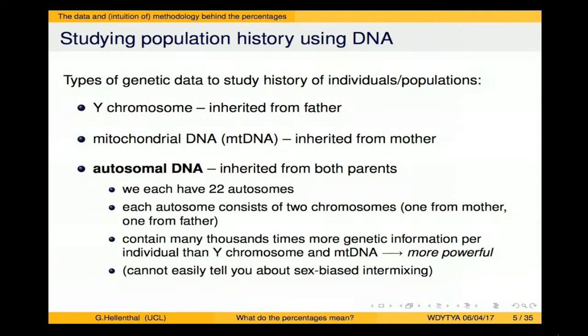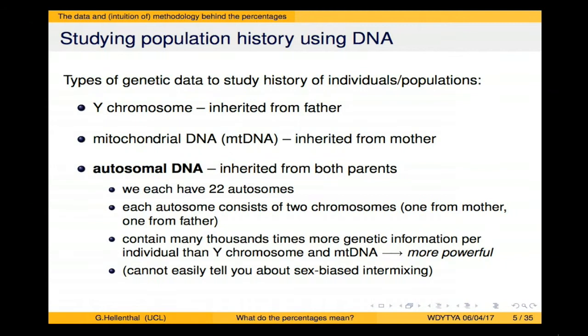While the Y-chromosome traces to one single ancestor and mitochondrial DNA to another, your autosomes can trace to thousands of ancestors — that's why there's thousands of times more information, giving a more complete picture of ancestry. A drawback is that it can't easily tell you about sex-biased mixing. For example, if one parent came from Africa and one from Europe, you could readily tell which using Y-chromosome or mitochondrial DNA, but the autosomes average across those two backgrounds.